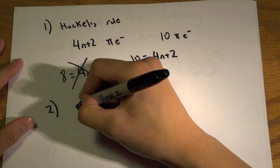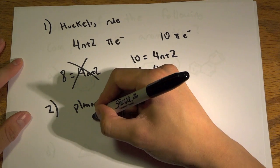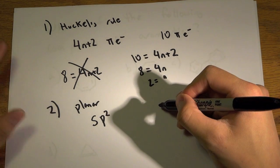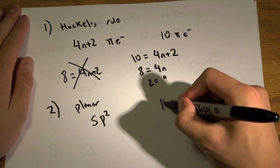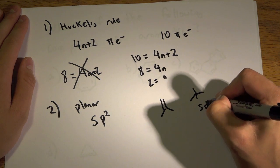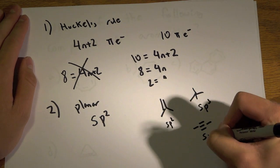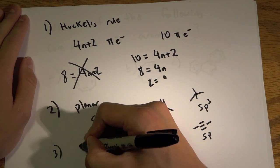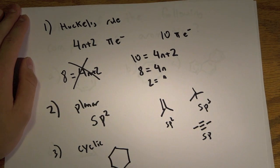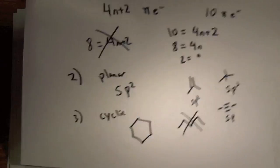The second rule is that the molecule has to be planar — everything has to be sp2 hybridized. If you remember, sp2 means that it's flat. Something like this is sp2, something like this is sp3, and something like this is sp. The third rule is just that it has to be cyclic, meaning in a circle. So those are the pretty basic rules.